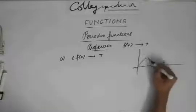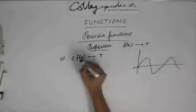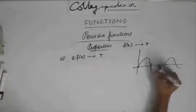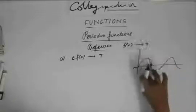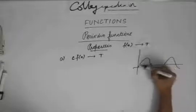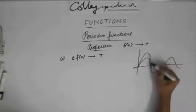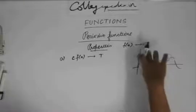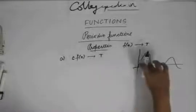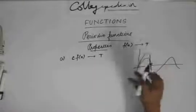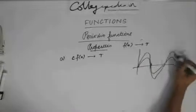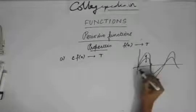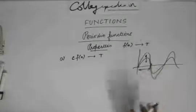Consider the graph of sine x. If I multiply the function by a constant c, there is a change in the height — a vertical scaling. If c is greater than 1, the function gets expanded vertically; if c is less than 1, the function gets contracted. There is variation in the vertical direction but no variation in the horizontal direction, so the period doesn't change.